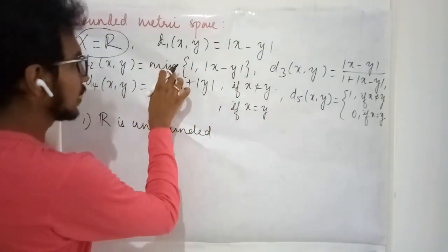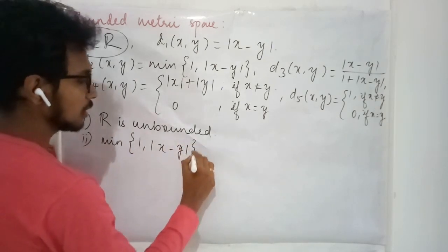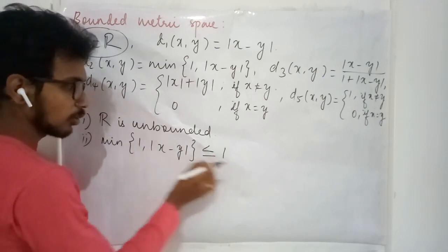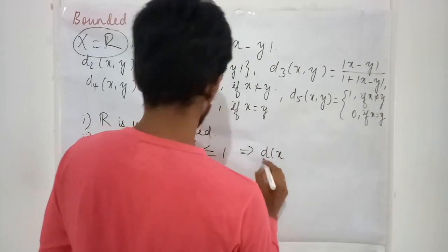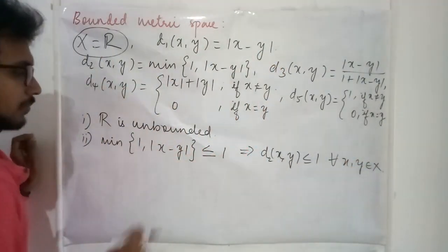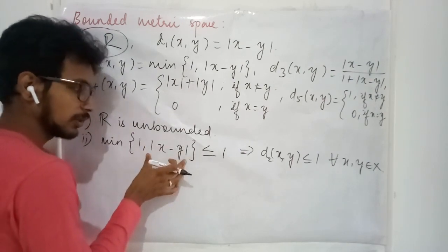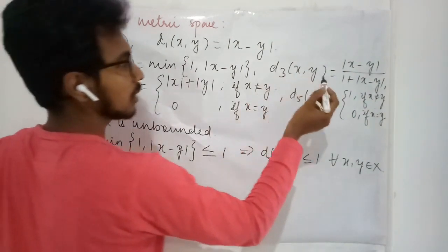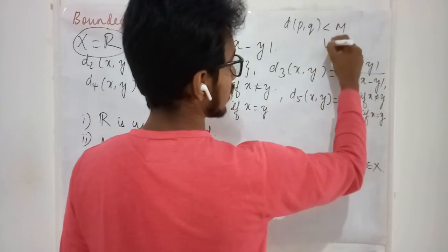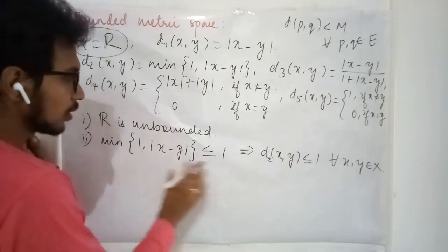Now the second case: d2 = min(1, |x − y|). This minimum value is going to be less than or equal to 1 — whatever values you give for x and y, d2(x, y) ≤ 1 for all x, y in R. If |x − y| is bigger than 1, then 1 is chosen; if it is smaller than 1, that value is chosen, which is also less than or equal to 1. So the metric value is ≤ 1, satisfying d(p, q) < M. Therefore, under d2 your R becomes a bounded metric space.